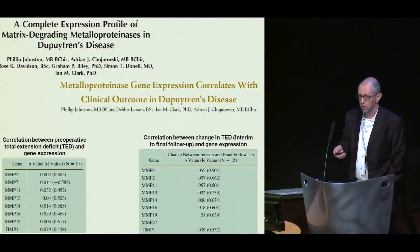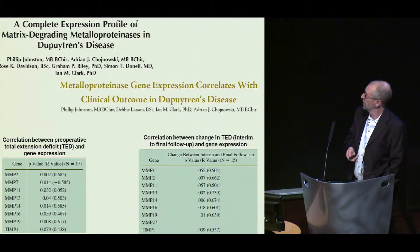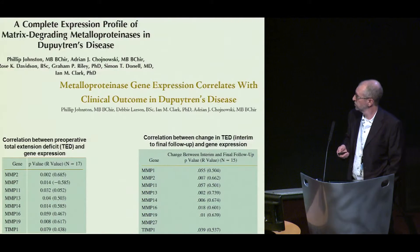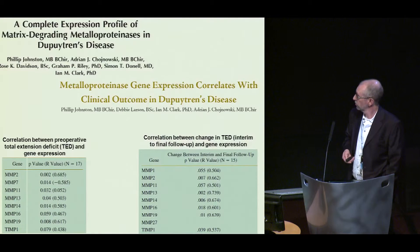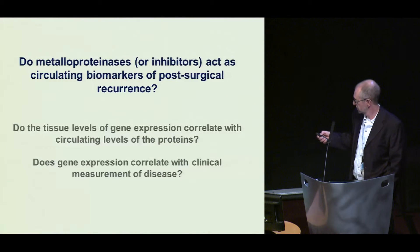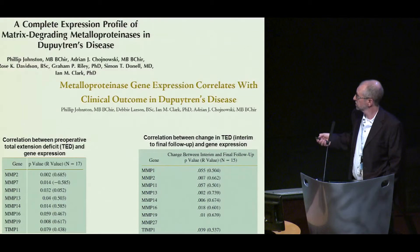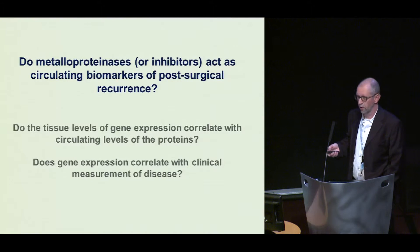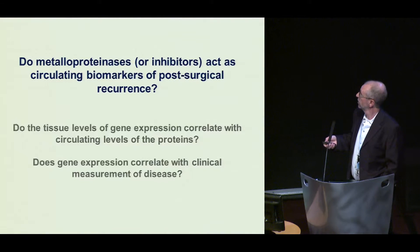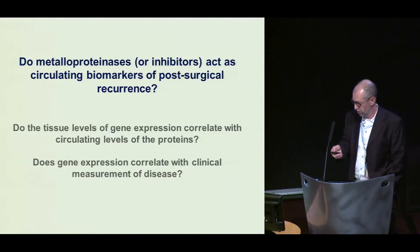Some years ago we measured those genes and all of the family members in Dupuytren's tissue at the messenger RNA level, and correlated the expression of some of those genes with total extension deficit, or changes in total extension deficit immediately post-surgery through to a long post-surgical phase which we defined as recurrence. We can see correlations with preoperative total extension deficit (TED) and the change we call recurrence. We now wanted to ask: do the circulating levels of those proteases, measured by ELISA, actually correlate with recurrence and can they act as biomarkers?